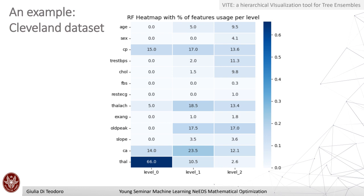We created heat maps that show the feature frequency usage at each level or at each node across the trees of the forest. This is an example of an application of this visualization on the Cleveland dataset — a UCI machine learning toy dataset for classification. For example, the feature 'thal' is used 66% of the time at depth zero, which implies it is probably one of the most important features in the feature set.